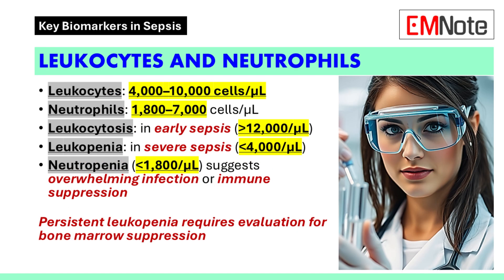Leukocytes and neutrophils are components of the immune system that respond to infection. The normal range for leukocytes is 4,000 to 10,000 cells per microliter, while neutrophils typically range from 1,800 to 7,000 cells per microliter, representing 40 to 70% of total white blood cells.